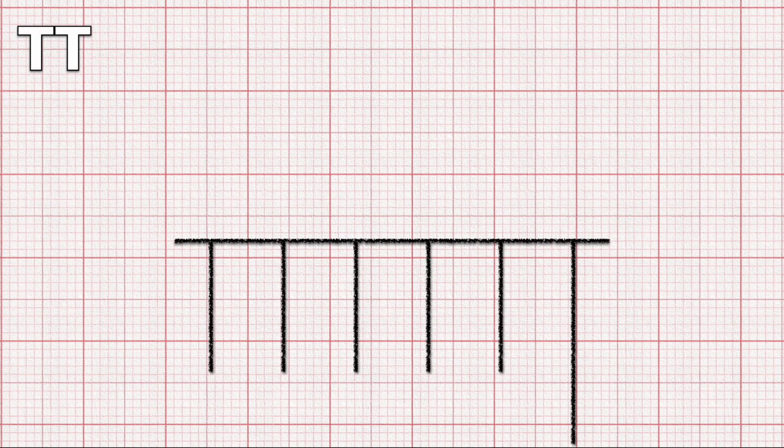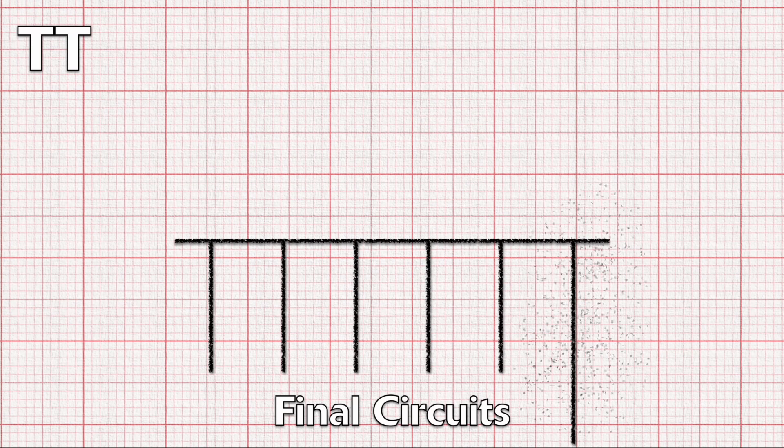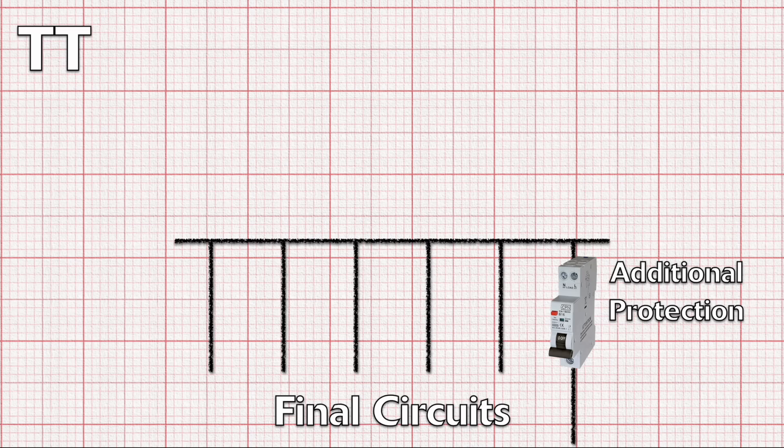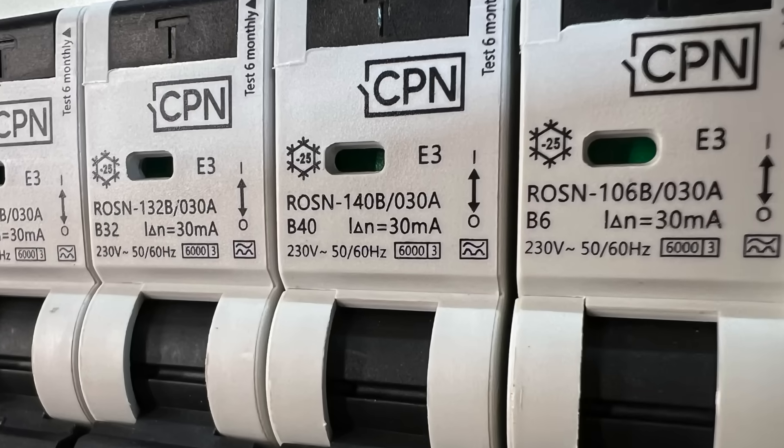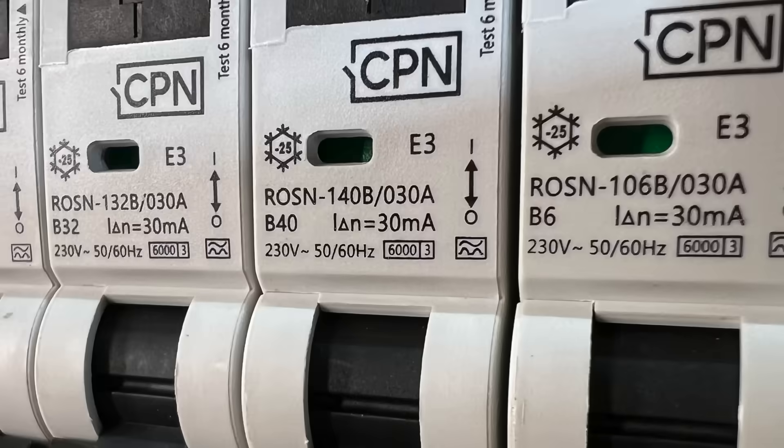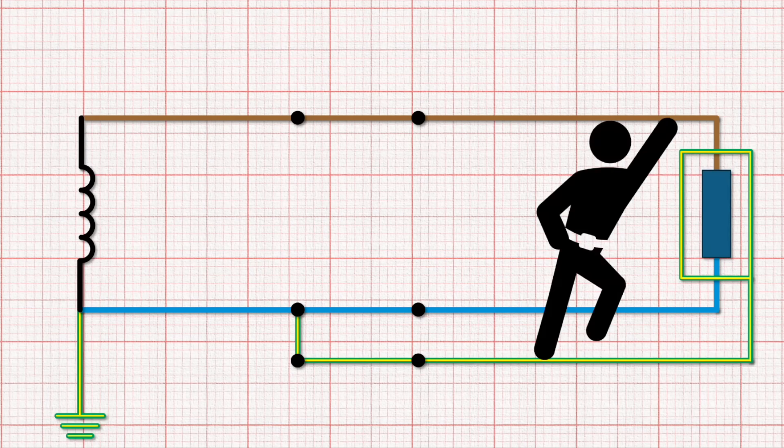So let's say you're protecting a final circuit in a TT system. For the reasons outlined earlier you'll probably need to use an RCD for additional protection. And so an RCBO rated at 30 milliamps will disconnect overload, short circuit and high impedance earth faults either through the wiring system or a person.